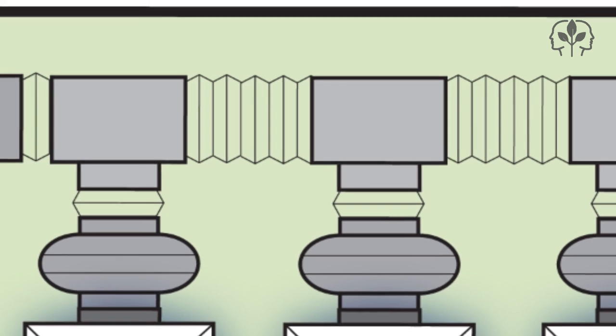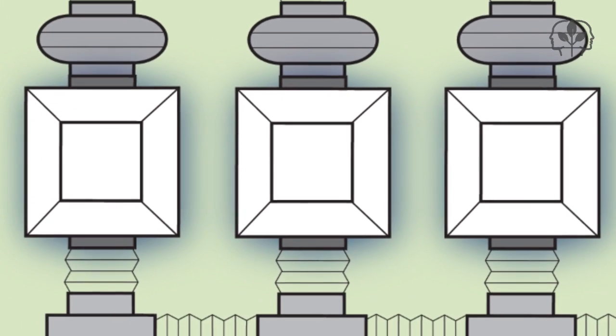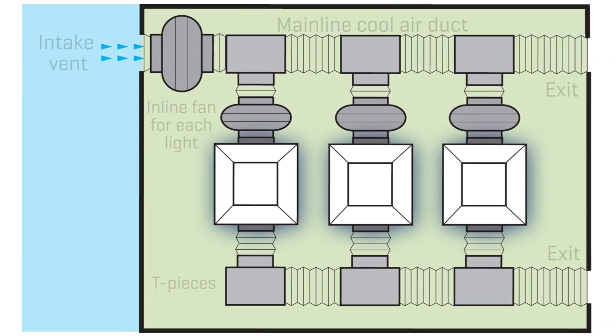For maximum cooling efficiency, bring in one mainline cool air duct and use T-pieces and ducting to serve each light individually. Use the same principle for extracting the air.